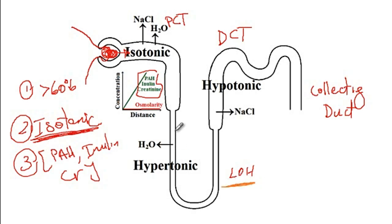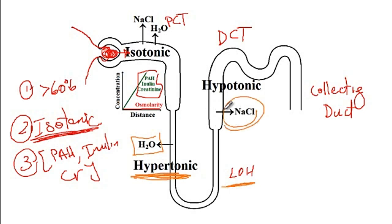From the proximal convoluted tubule, urine enters the descending limb of the loop of Henle, which is only permeable to water — so the filtrate becomes hypertonic. Then urine enters the ascending limb, which is only permeable to salt, so there is now a hypotonic or decreased osmolarity of the urine.